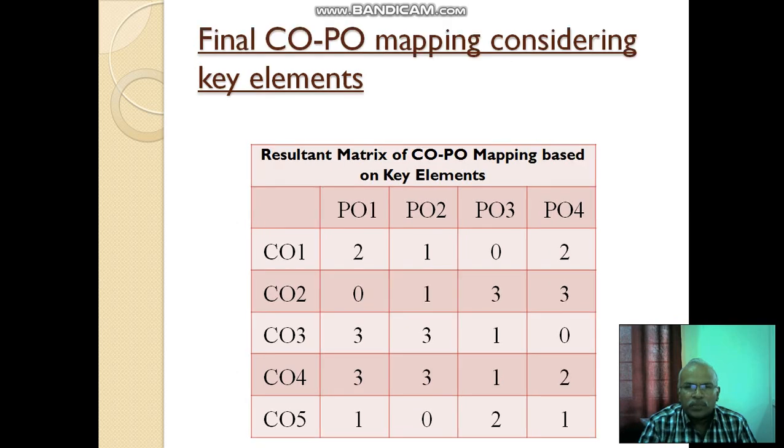Now, how to create final CO-PO mapping is by considering key elements. The formula is number of key elements. Assume that PO1 is addressed by course outcome 1 is 2. 2 by total elements of program outcome 1 is 3. 2 by 3 into 100. It may be 66%, but our threshold is 70%. If less than 70%, it is 2. Greater than 50, less than 70. So, CO1, PO1, it is 2.